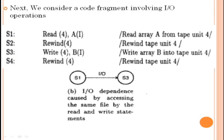Next, we will consider a code fragment involving input-output dependency. In the previous example we saw flow dependency and anti-dependent statements. In this example we will see input-output operations. As shown in this figure, S3 is input-output dependent on S1.